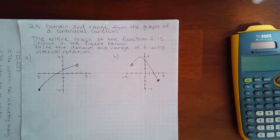Okay, here we have 2.5 domain and range from the graph of a continuous function. The entire graph of the function f is shown in the figure below. Actually, I have two of them though. Write the domain and range of f using interval notation.